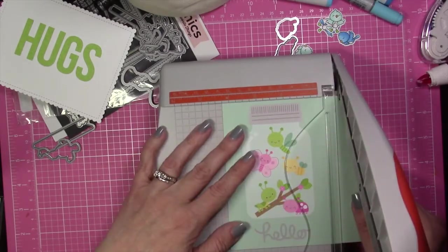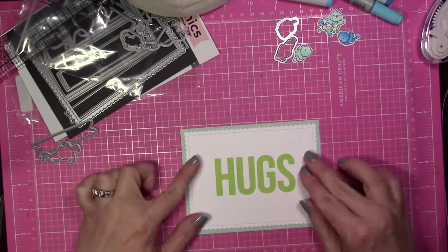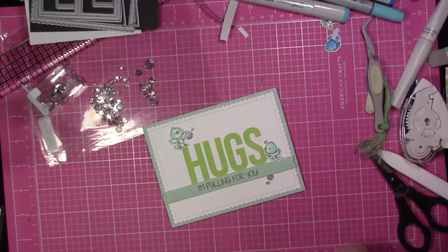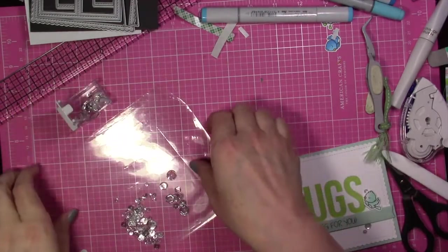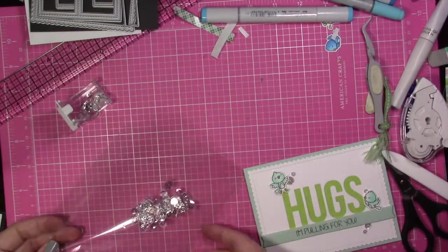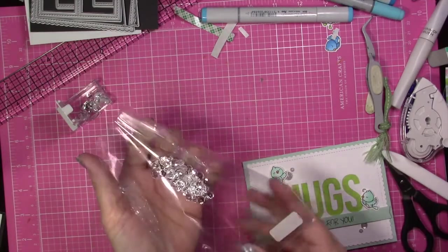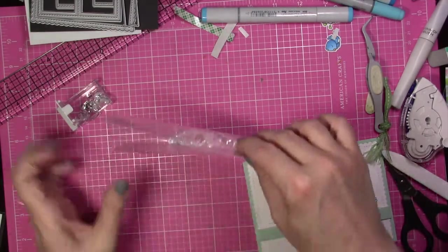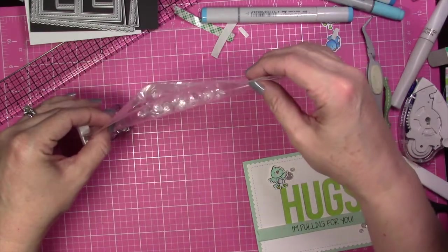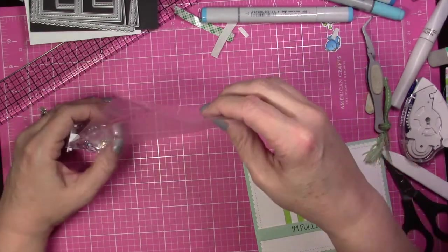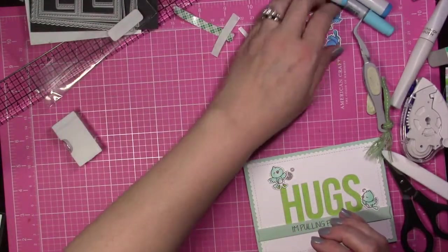Once I have that all trimmed up, I adhered the patterned paper panel to a white card base. I'm missing the entire clip from where I finished the card and stamped the sentiment. What I did is I used the banner die from the Blueprints 27, and I cut out an additional piece of that patterned paper we used behind the hugs panel. I stamped the sentiment on it with the same jet black ink from Lawn Fawn, and then just adhered the little birds with some foam tape, and then I added some sparkling clear sequins from Pretty Pink Posh to finish it off.